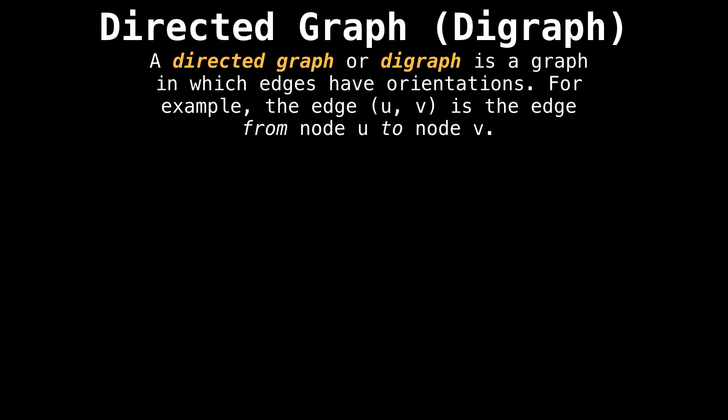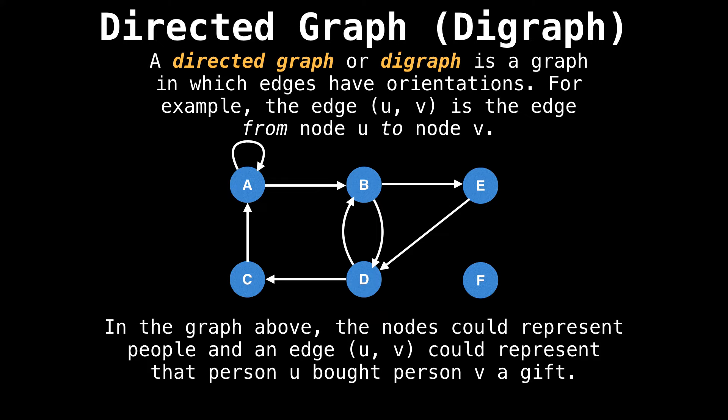In contrast to undirected graphs, there are also directed graphs, sometimes called digraphs. In these graphs, you've guessed it, the edges are directed. So if we have an edge from U to V, then you can only go from node U to node V, not the other way around. In this graph, you can see that the edges are directed because of the arrowheads on the edges between nodes.